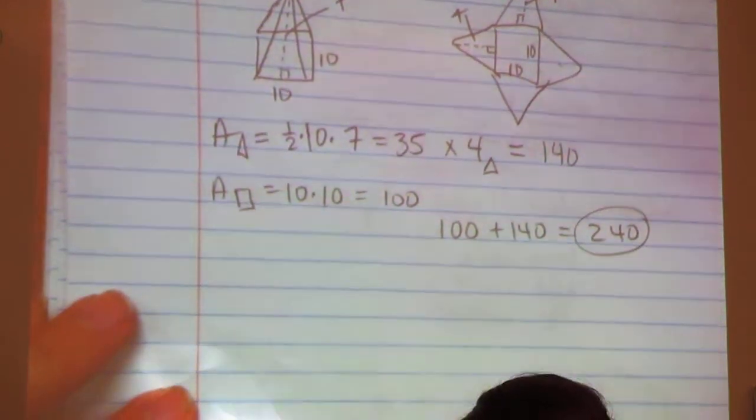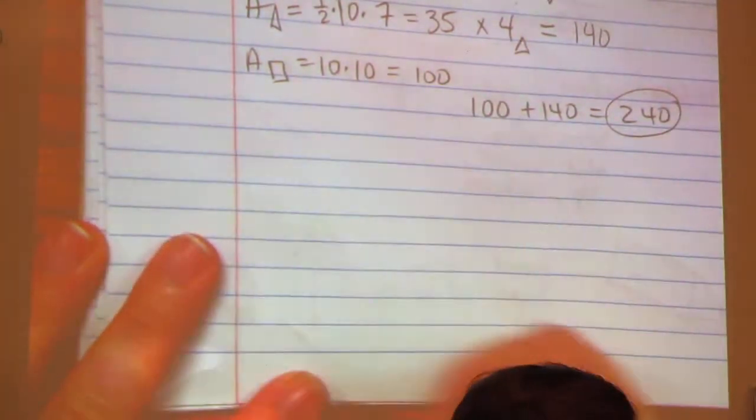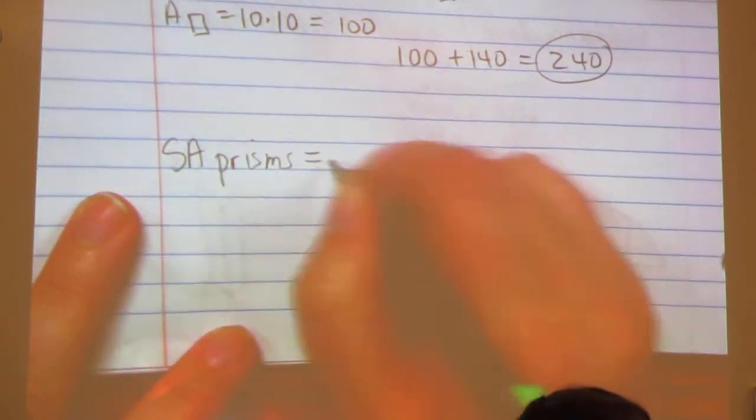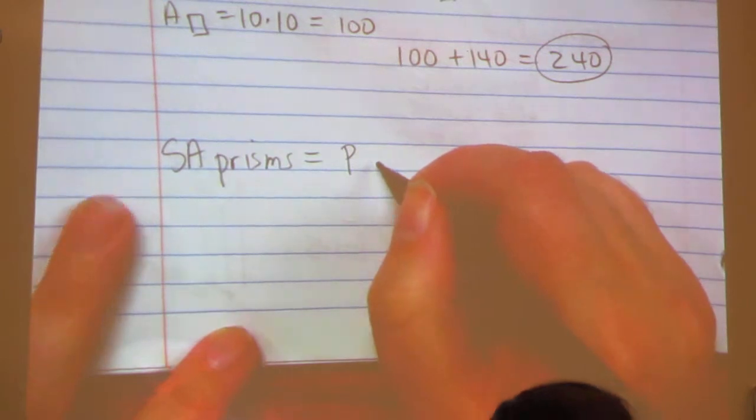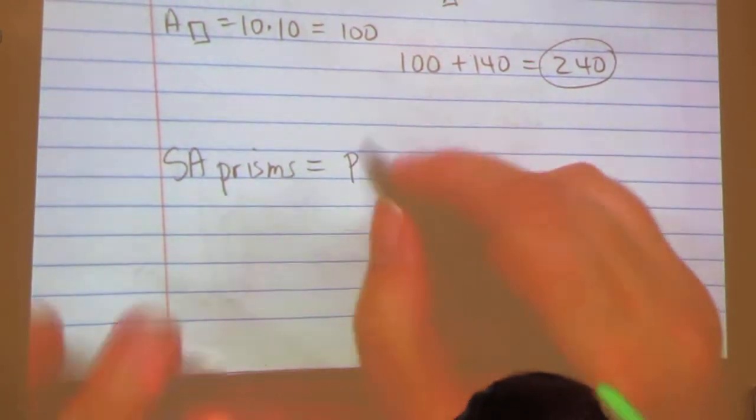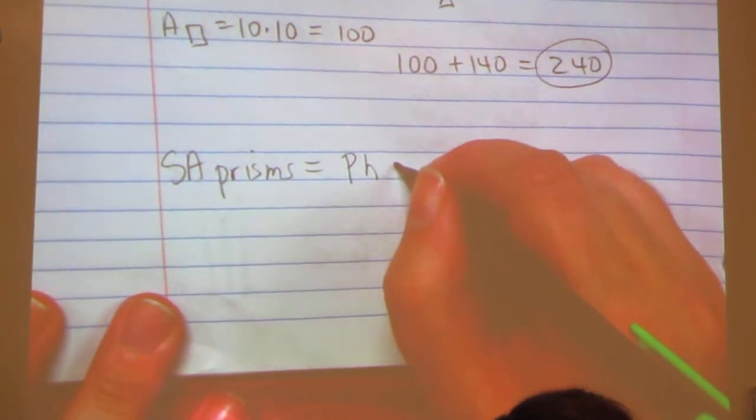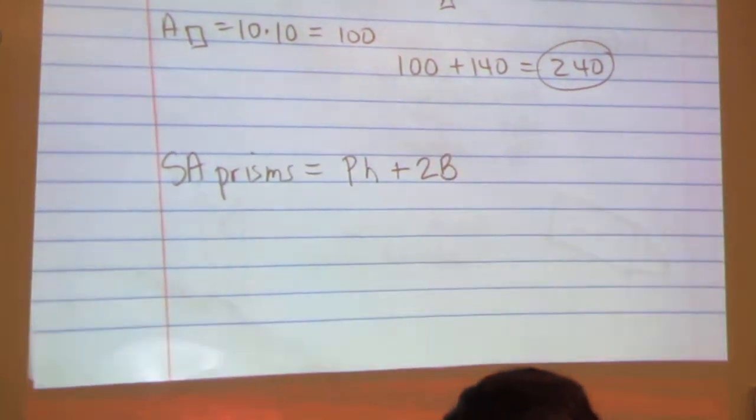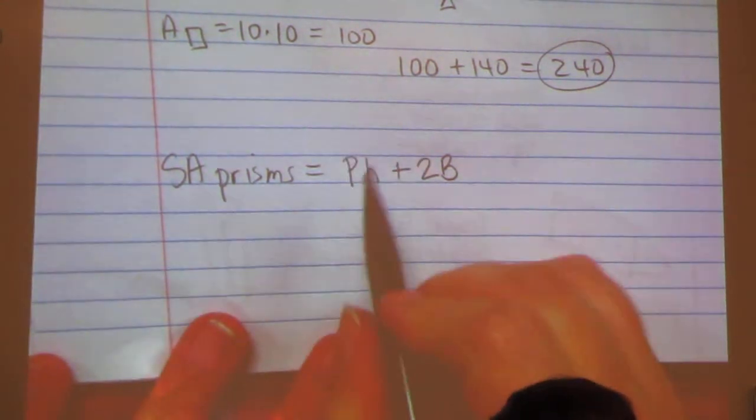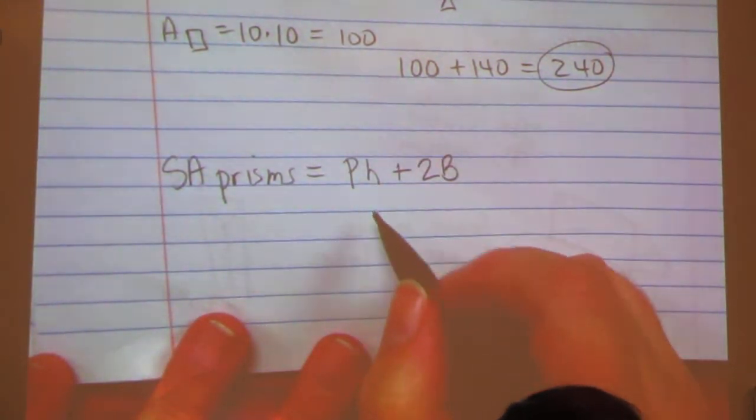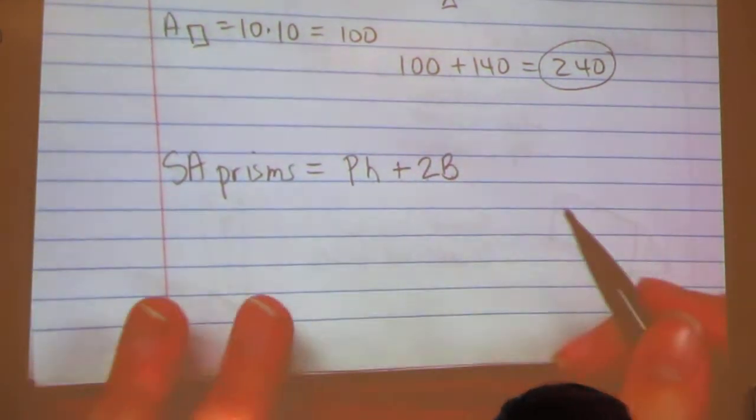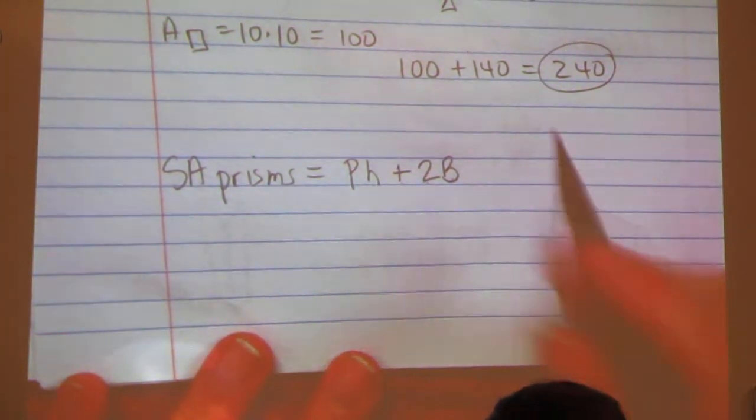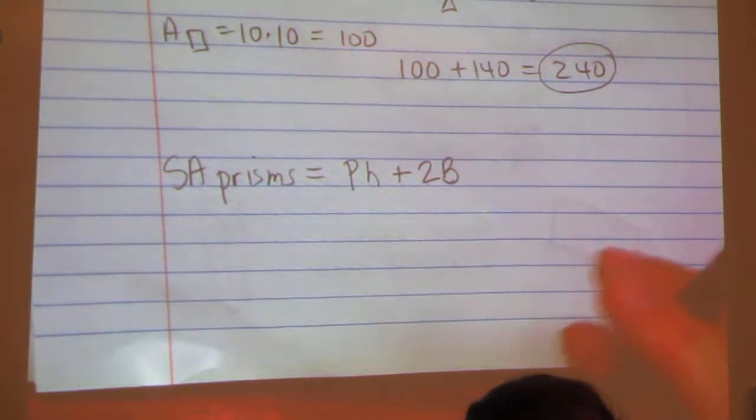You also—there is a formula for surface area of prisms. And that's the perimeter of the base times the height plus 2 times the area of the base. So you could do the perimeter of the base times the height and add that to 2 times the base area for a rectangular prism. You could do that. I like the nets better, but it's up to you what you want to use.